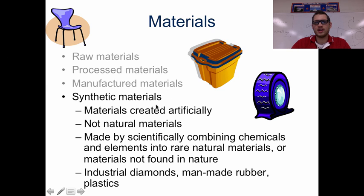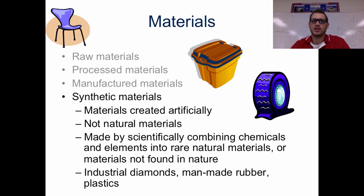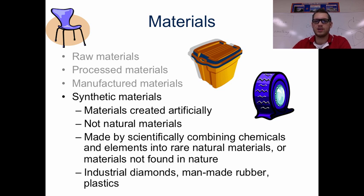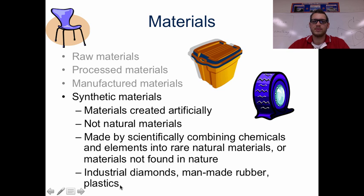Another type of material is synthetic materials. Think of a tire on a car — this originally came from oil out of the ground that was then heated and pressurized. Different parts were used to make gasoline, diesel, rubber, and then that rubber is taken, heated, changed, and metals are added to it. Plastic chairs and rubber boxes are not natural materials — these are things you won't find anywhere in the world unless made by a human. It often takes scientifically combined chemicals, and you have to understand heat, pressure, and how things change molecularly. Examples include industrial diamonds, man-made rubber, and plastics.